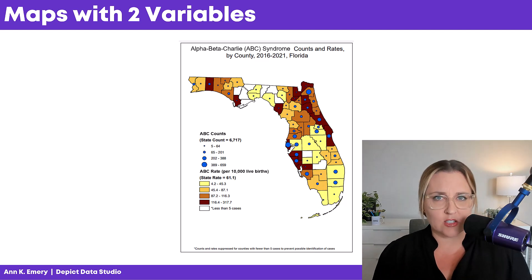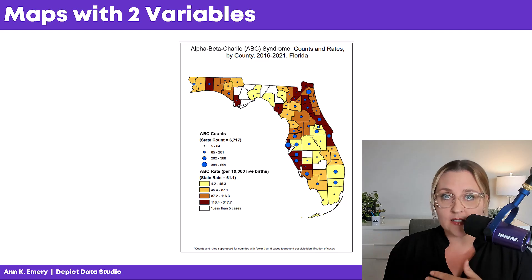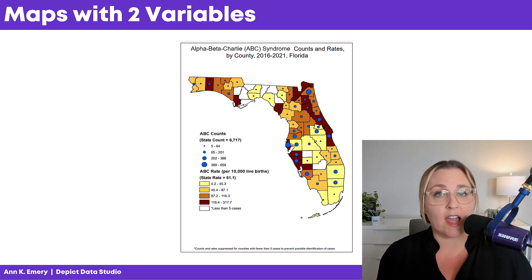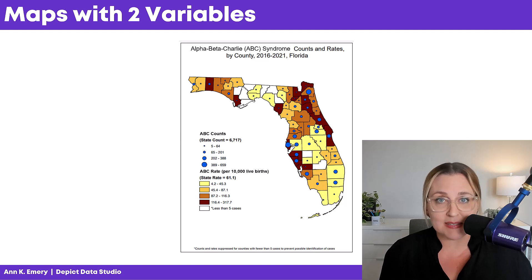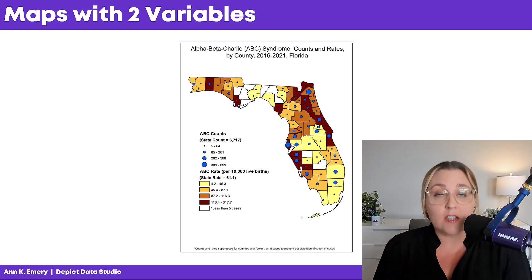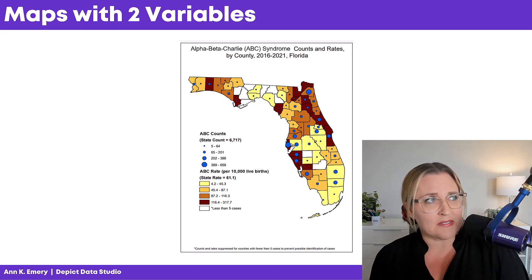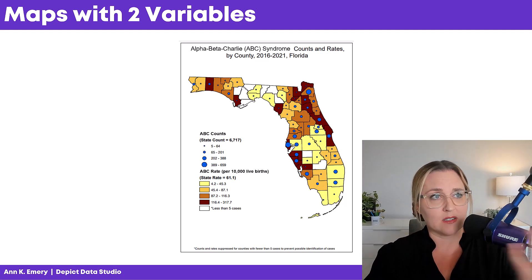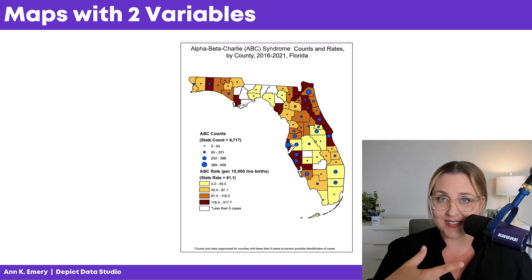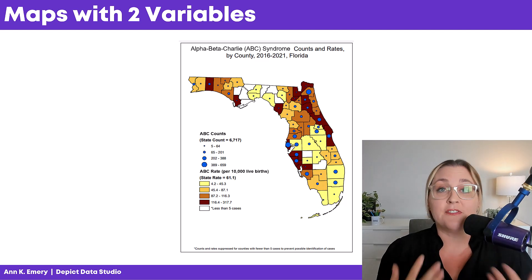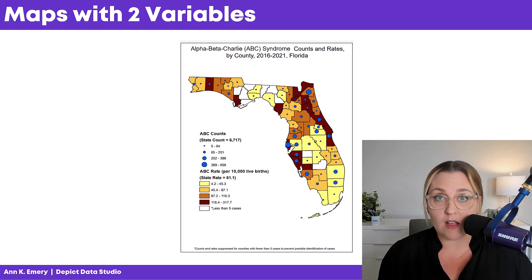This is a really common thing to need to look at in public health — counts and rates. But even if you're not working in public health, I bet you have maps and graphs that are really busy and really dense. So a good rule of thumb is: if it feels a little bit busy, if it feels like it's two variables on top of each other — like this one literally is, circles on top of shading — if it feels too busy, time out. Try small multiples.